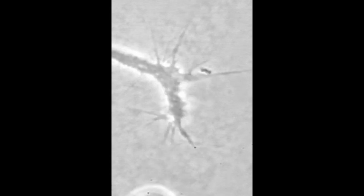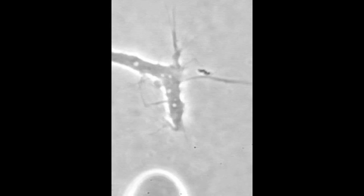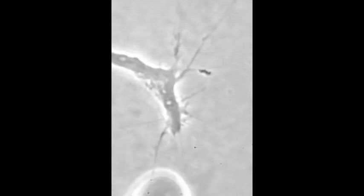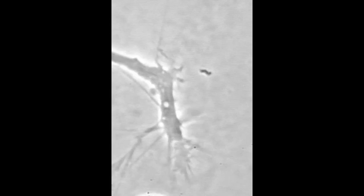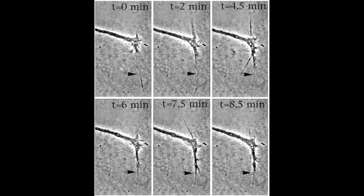Soon, growth cone contents move into a filopodium that adheres along the border, leading a turn to remain on the laminin. This figure shows that growth cone material advances into a single filopodium over the eight-minute duration of the turn.